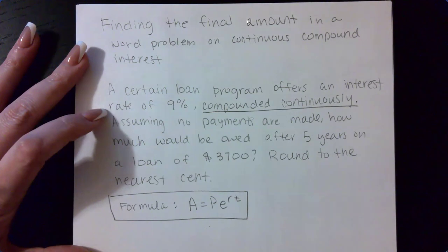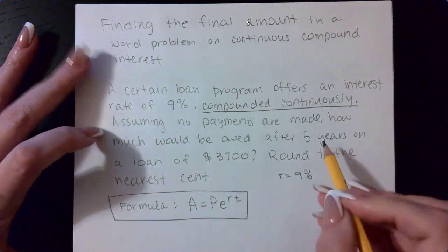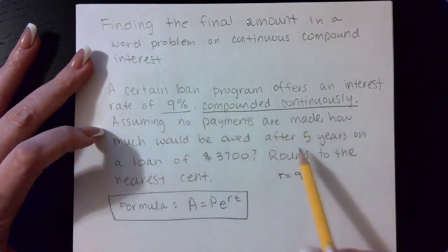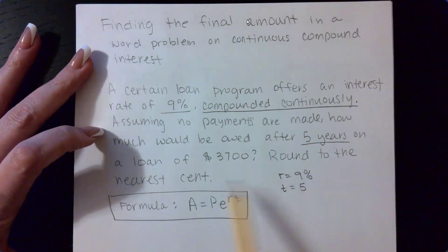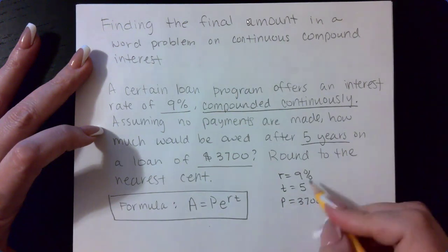Now, they did tell us our rate. So our rate is this 9%. They did tell us the years, so we know that our time is going to be five. And they did tell us that we were borrowing this amount, which means that's our P, $3,700.